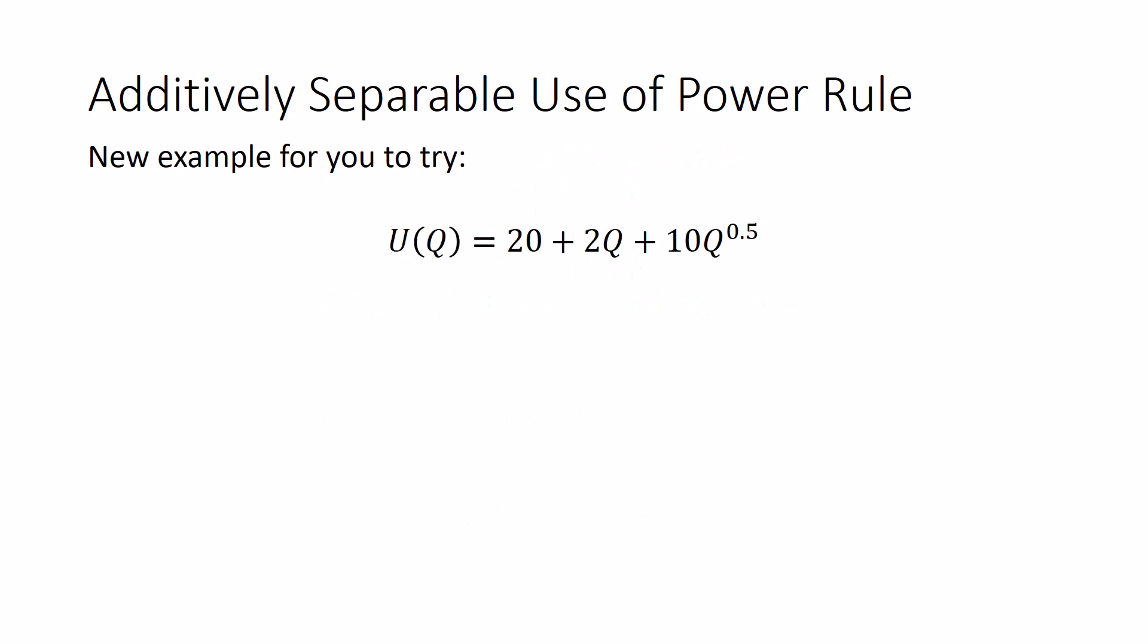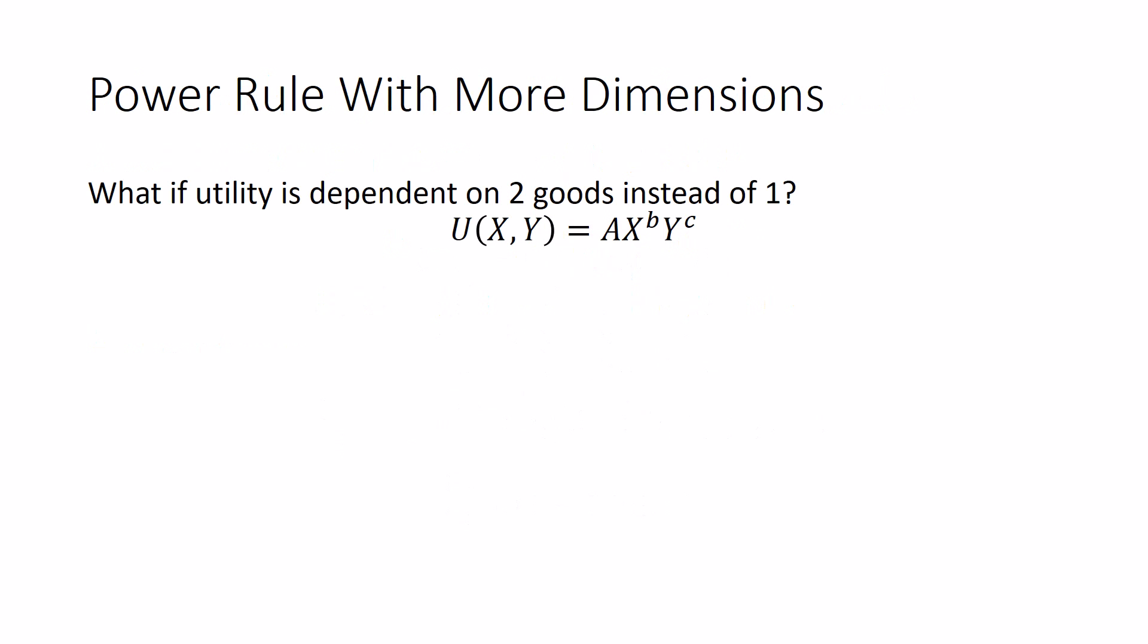So here's an example for you to try on your own time. u(q) equals 20 plus 2q plus 10 times the square root of q. Pause the computer and try to solve it because I'm not going to. And your answer for the marginal utility is 0 plus 2 plus 5 over square root of q.